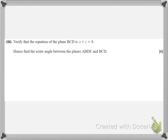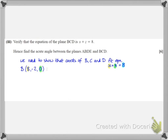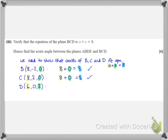For the last part, we first verify that the equation of the plane BCD is x plus z equals 8. Verify means we just check that the coordinates of B, C, and D satisfy the equation. B has coordinates 8, minus 2, 0 (using a = 2): 8 + 0 = 8. C was 8, 2, 0: 8 + 0 = 8. D had coordinates 6, 0, 2: 6 + 2 = 8. Therefore the equation of the plane is x plus z equals 8.